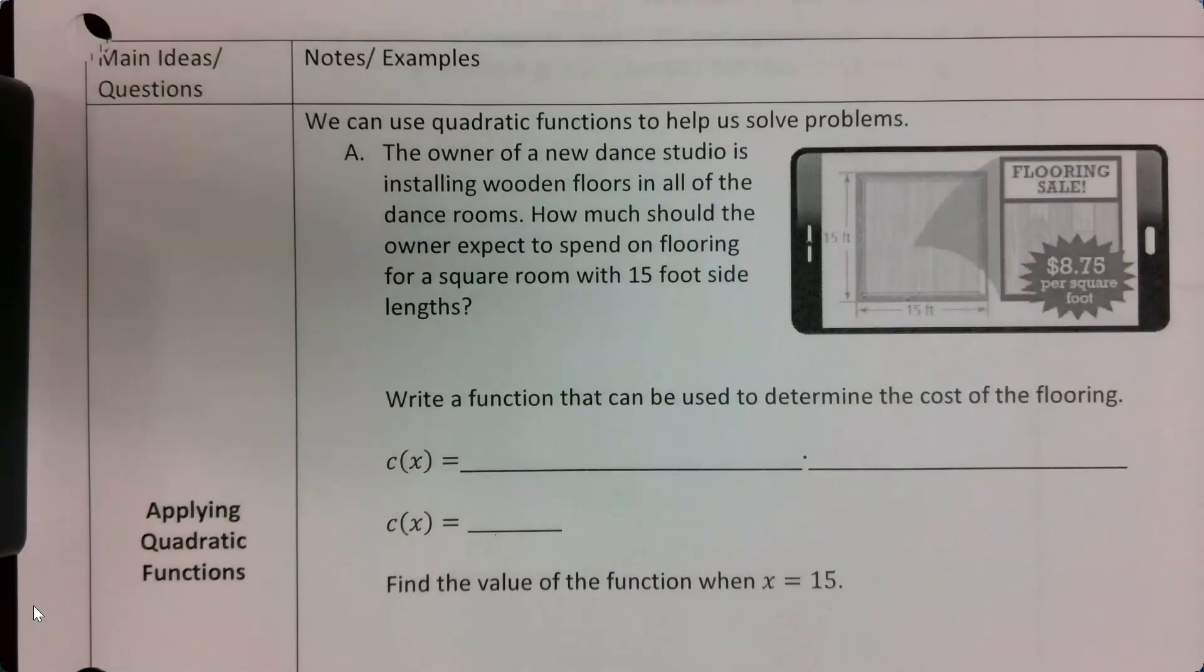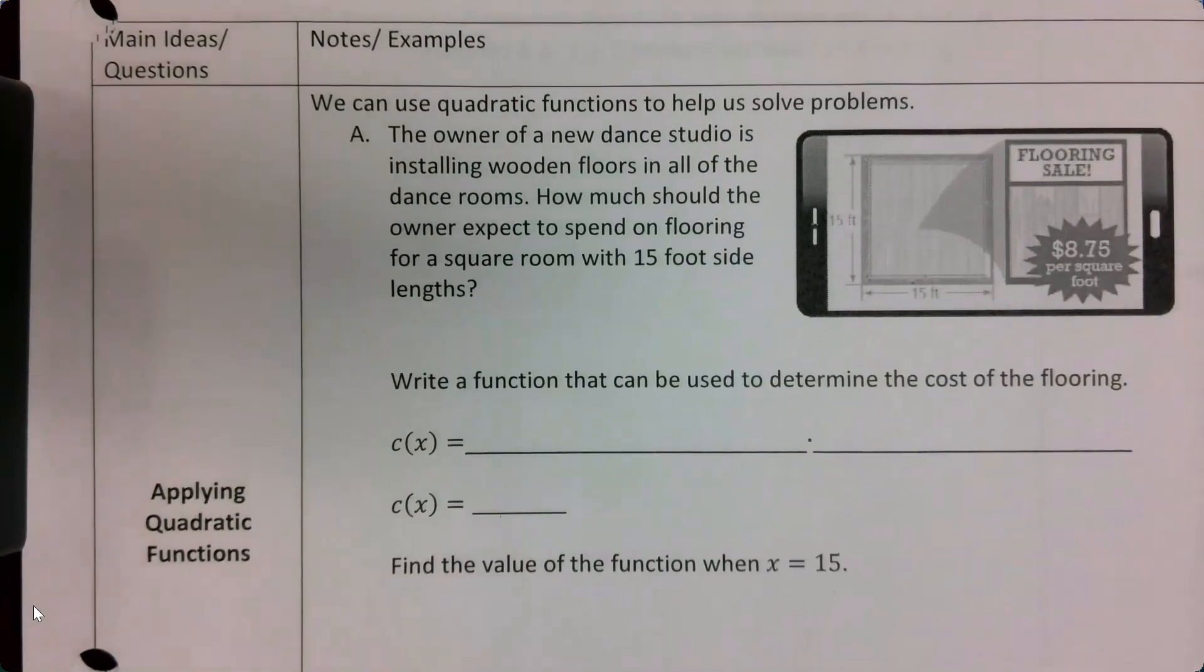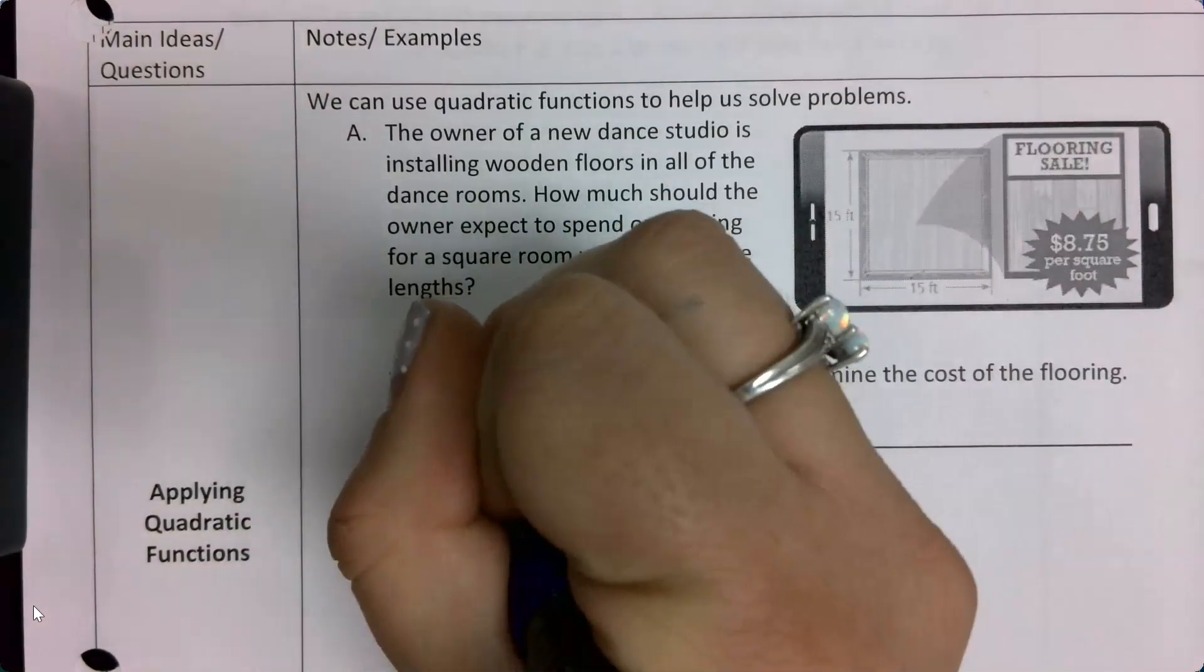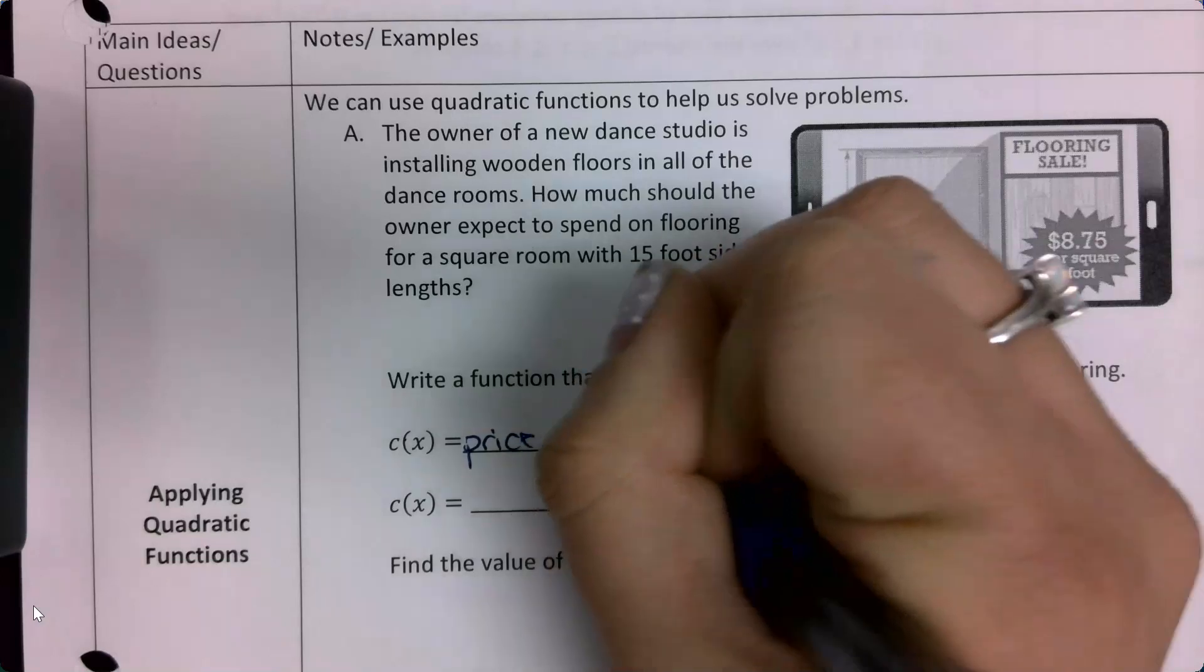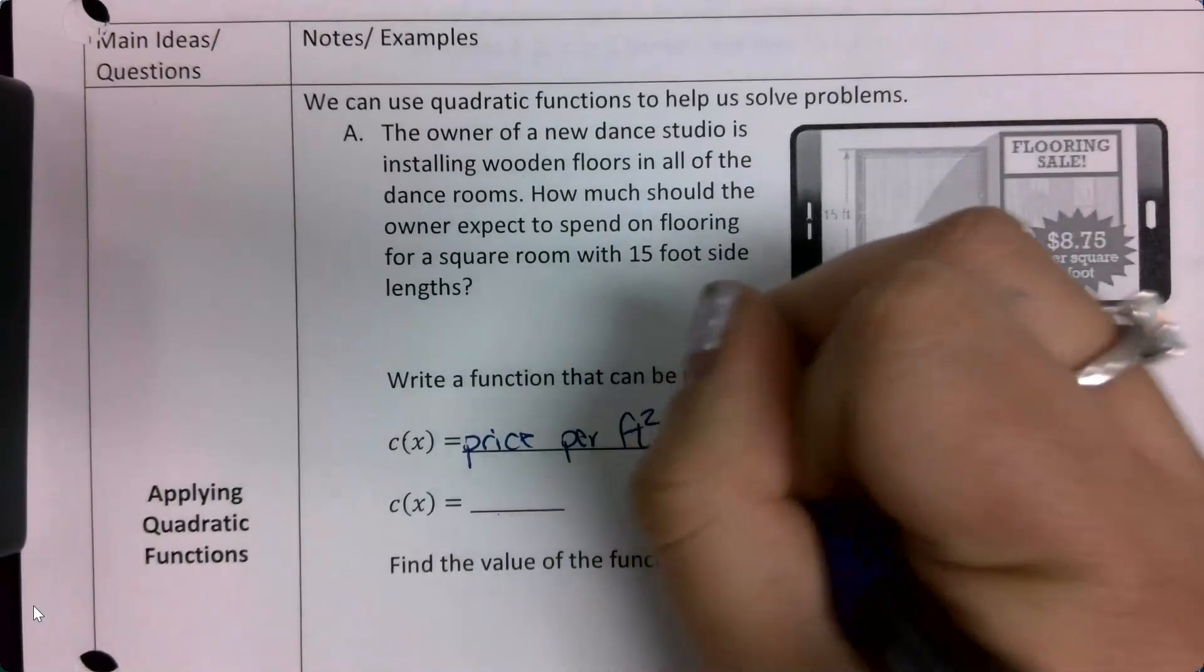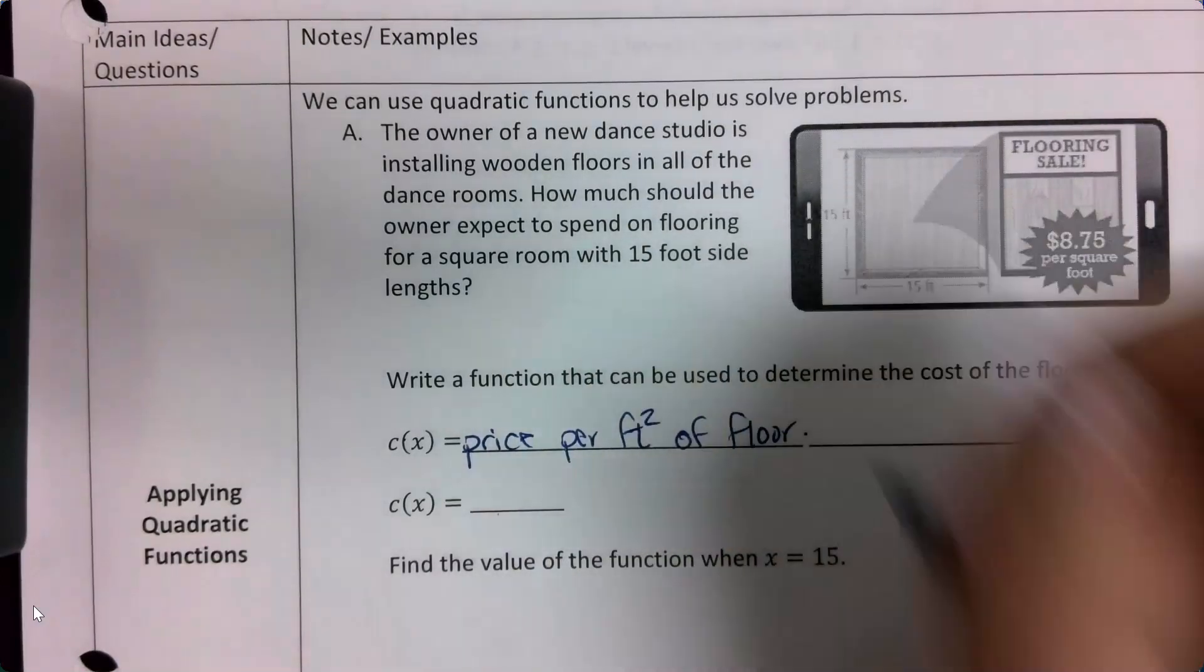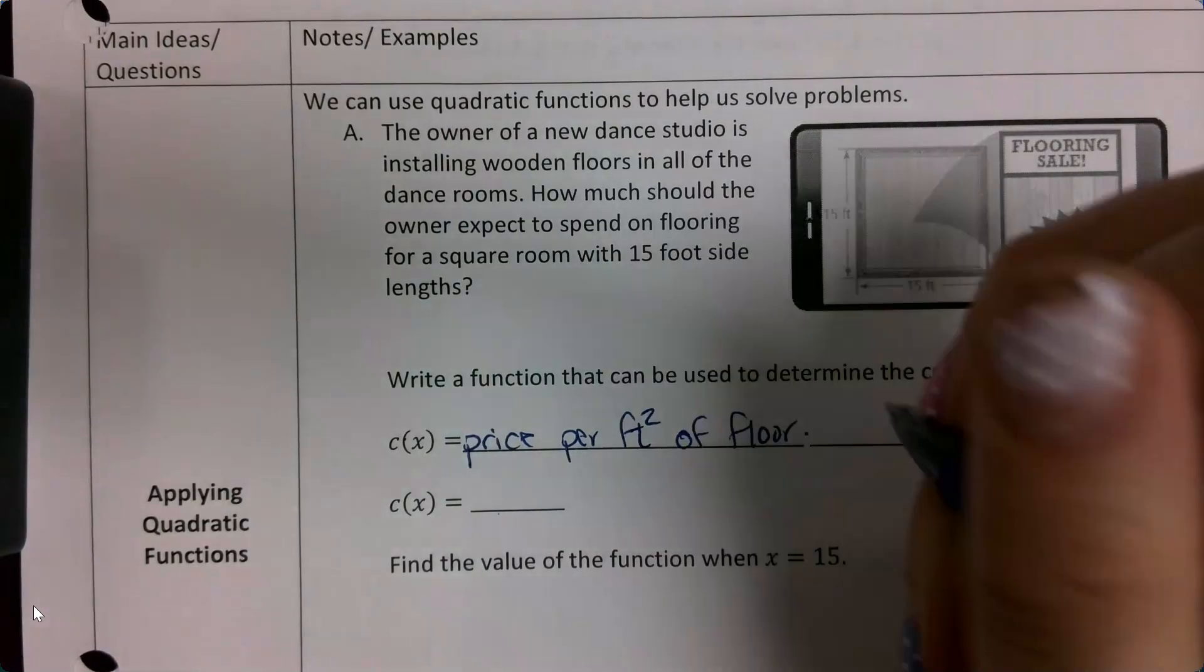So the first thing I want to do here is write a function that can be used to determine the cost of the flooring. So I want price per feet squared of floor times the area of the dance floor in feet squared.